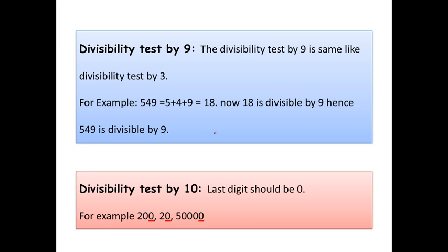Now, let us see the divisible test by 10. Last digit should be 0. For example, 200. Here, the last digit is 0. So, it is divisible by 10. Next example is 20. Here, the last digit is also divisible by 10. Next example is 50,000. Here, the last digit is 0. So, it is also divisible by 10.